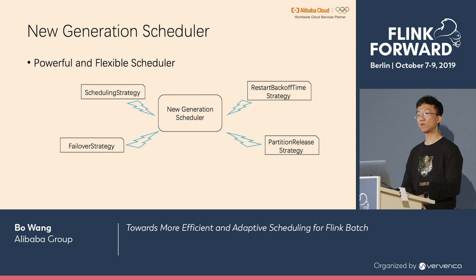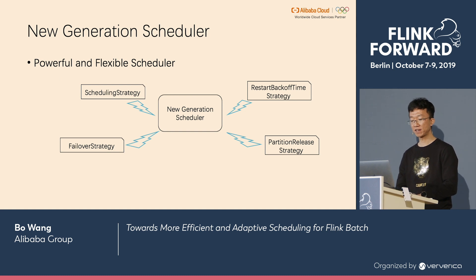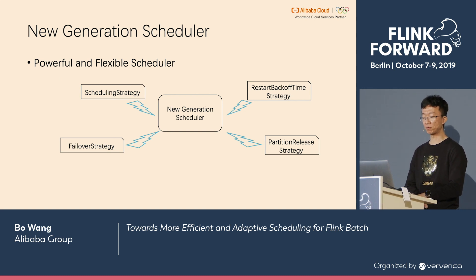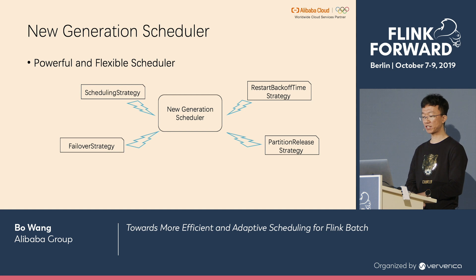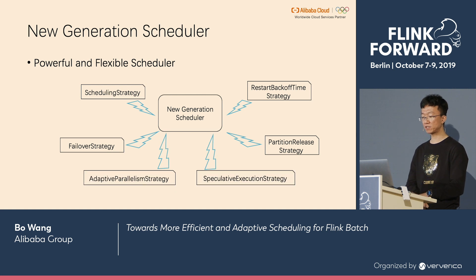In Flink 1.9, the new generation scheduler emerged, which is more powerful and flexible. Based on this scheduler, people could implement various strategies such as scheduling strategy, failover strategies, or partition release strategies. And based on this new scheduler, we could also implement adaptive parallelism strategy and speculative execution strategy.